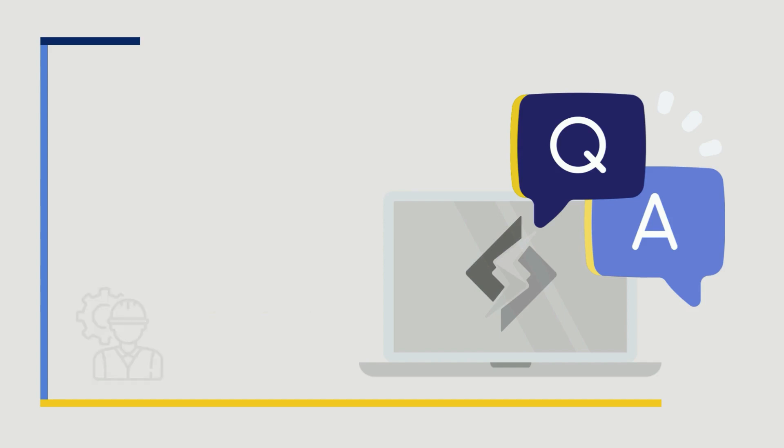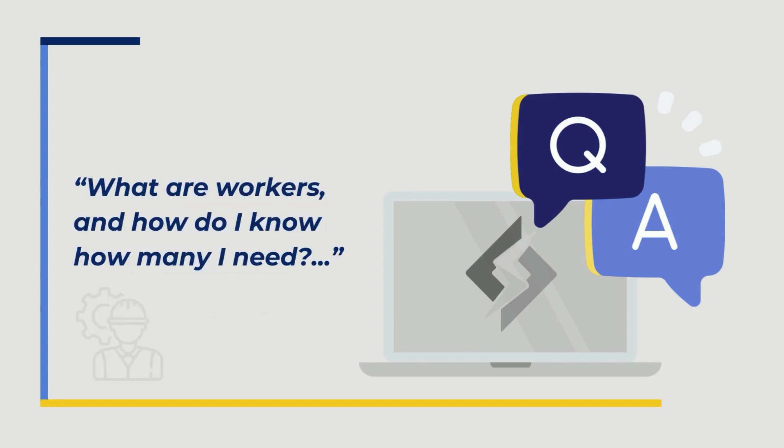What are workers and how do I know how many I need? A worker is a Lightspeed process that is spawned to do general server tasks. This includes routing requests, SSL decryption and encryption, caching, rewriting, serving static content, and more. The more workers your license has, the more of these general tasks that can be performed at one time. As for how many you need, it may be a matter of trial and error.